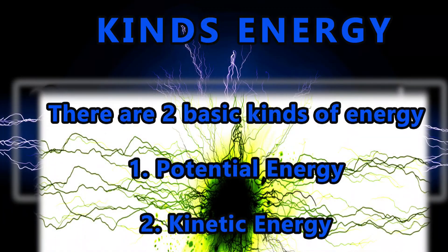Now let's look at the kinds of energy. There are two basic kinds of energy. Number one, potential energy. Number two, kinetic energy.